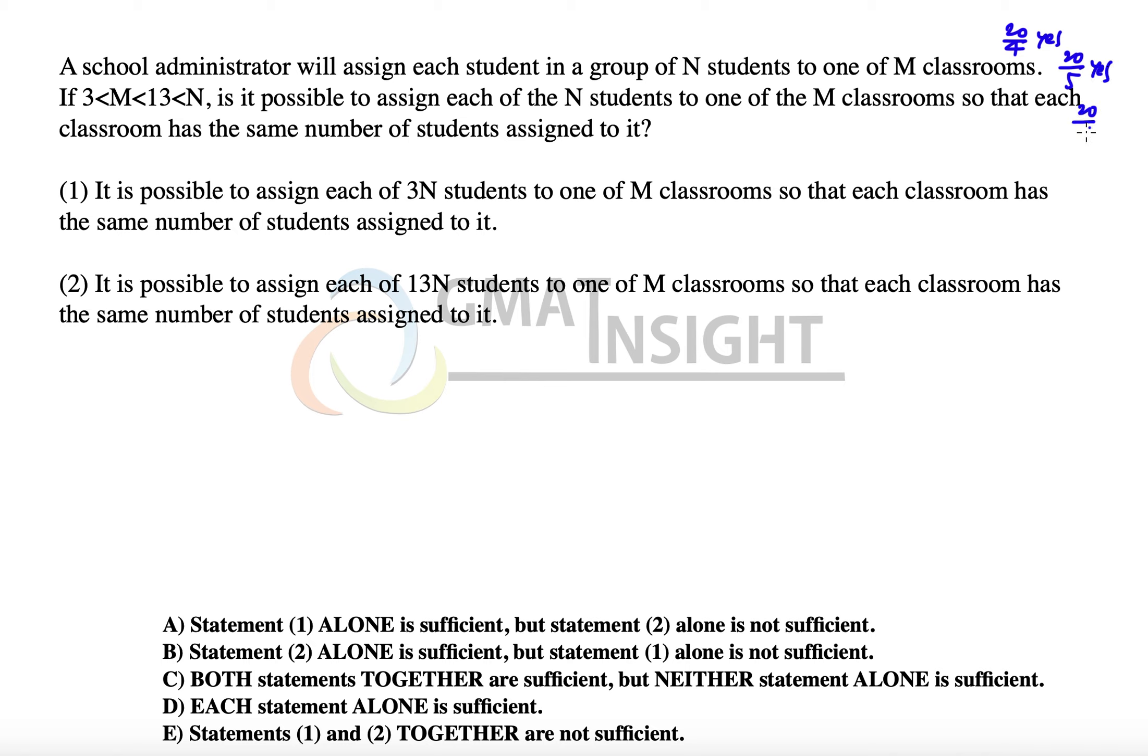If we have 20 students, can we assign them to 6 classes equally? The answer is no, which means the answer is yes when the number of classrooms is a factor of the number of students and no when the number of classrooms is not a factor of the number of students.